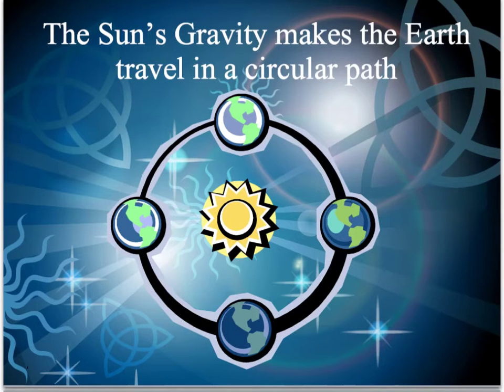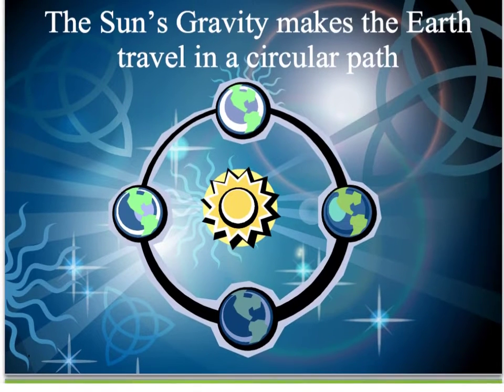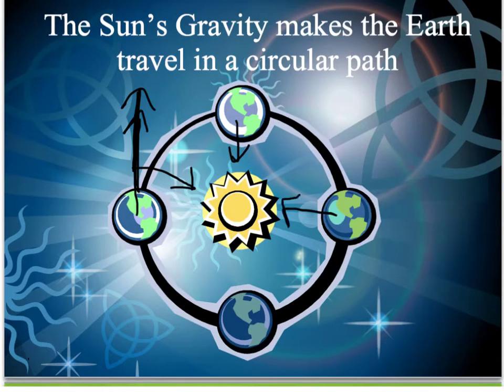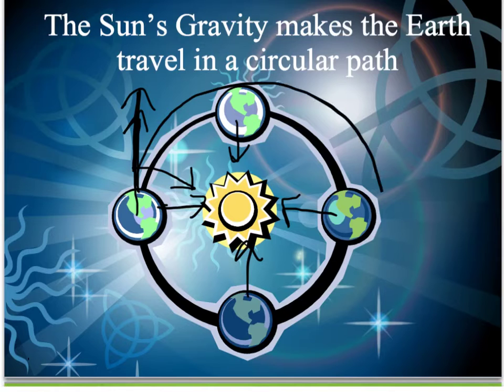The sun's gravity makes the earth travel in a circular path. Without the earth's gravity, things like to travel in straight lines. That's what inertia is all about. So the earth would just go off in this straight line, but the gravity of the sun, gravitational attraction between the earth and the sun, brings the earth into this circular orbit.